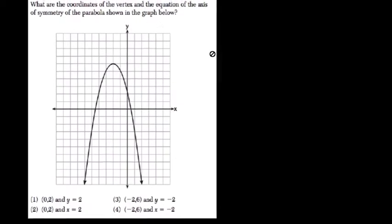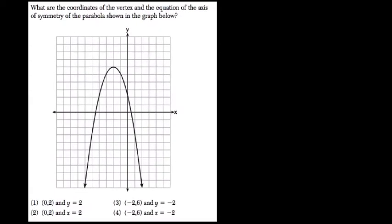They want to know what is the coordinate for the vertex. The vertex is the maximum or minimum point. It's negative 2, and then up 1, 2, 3, 4, 5, 6. So the vertex is at negative 2, 6.